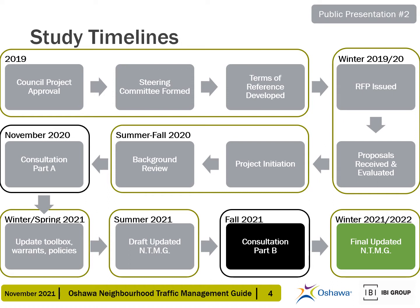Consultation Part A took place from November 2020 to January 2021. After those activities were completed, the study team updated the toolbox of traffic management devices, established warranting processes, and developed new traffic management policies through the winter and spring of 2021. This led to the development of the draft updated Neighborhood Traffic Management Guide in the summer of 2021. This presentation is part of the second round of consultation, and the final updated guide is targeted for completion in winter 2022.